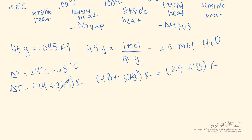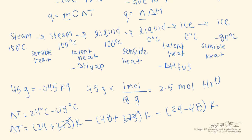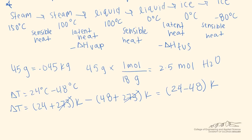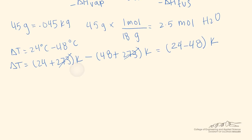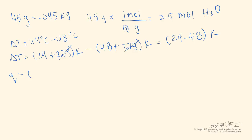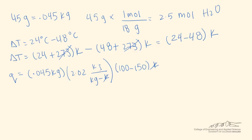Now I'll write the full equation for Q by combining all the equations describing each transition in the chart. Starting with steam at 150 degrees Celsius being cooled to steam at 100 degrees Celsius, we use the sensible heat formula: 0.045 kilograms times the specific heat of steam times the temperature difference. Units of Kelvin and kilogram cancel, leaving kilojoules. Next, we describe the change from steam at 100 degrees Celsius to liquid at 100 degrees Celsius using latent heat.